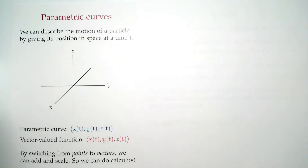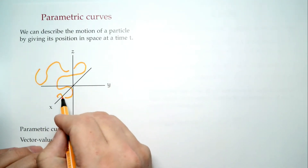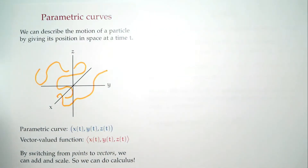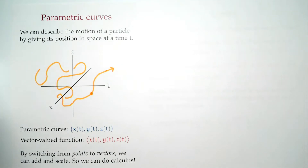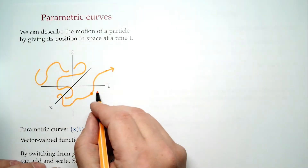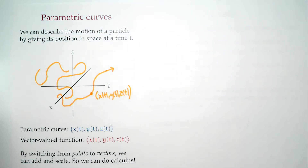So what is a parametric curve? The idea is: think of a particle moving through space. It's moving around — maybe it sneaks behind the z-axis, wraps around, and keeps going. At a particular moment in time I can ask, where are you? The answer is it's at some position in space, so we'll say it's at the position x(t), y(t), z(t). In other words, if you give me a time t, I'll tell you exactly each coordinate — I've located where I'm at. So this is intuitive, and these are what we call parametric curves.